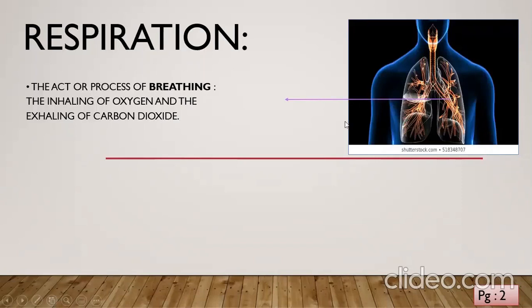The inhaling of oxygen and exhaling of carbon dioxide is called respiration or breathing. There is a slight difference between breathing and respiration — we are going to discuss that in the next chapter. If we talk about human beings, human beings respire by lungs. Air goes into the nostrils first, then into the trachea, after the trachea goes into the lungs, and here the oxygen is absorbed by the body and carbon dioxide is released. The released carbon dioxide comes out through the mouth or nostrils.